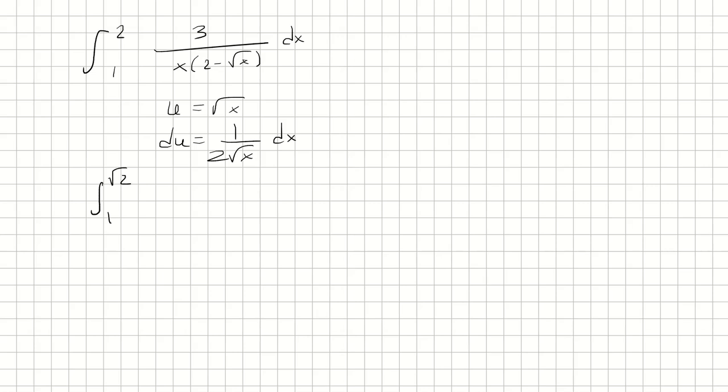And when I multiply both sides by 2 root x, I have 2 root x du equals dx, but root x is just u. So that's 2u du equals dx.